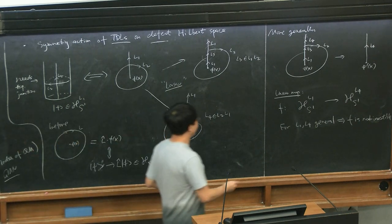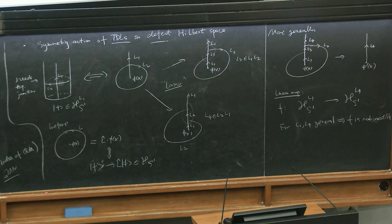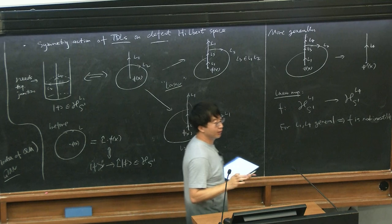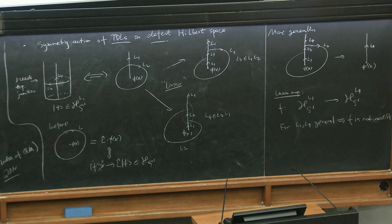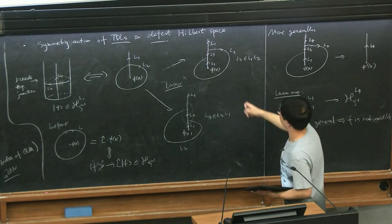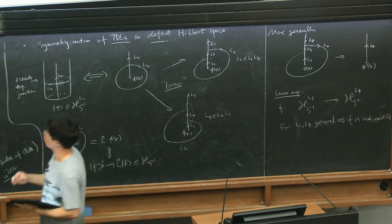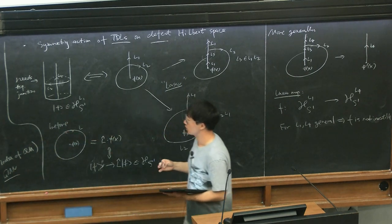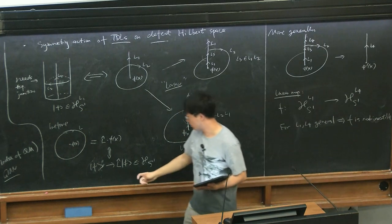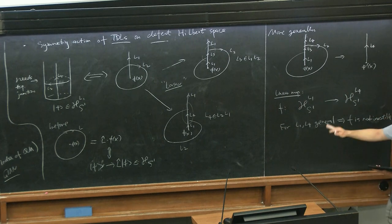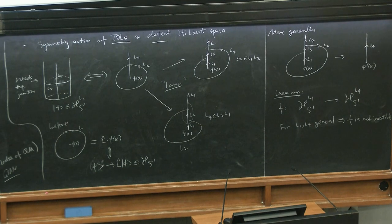The action of symmetry on the twisted sector is in general a very important object. In the case of group-like symmetries, the anomaly associated with a symmetry is encoded both by the non-trivial phase in the F move and equally by the symmetry action in the twisted Hilbert spaces. In that case L1 and L4 are the same, and the group-like symmetry acting in the twisted sector can develop projective representations, even though it acts as a linear representation on the untwisted Hilbert space.